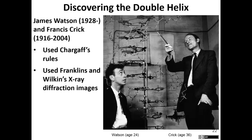Wilkins thought researchers needed to work together. Rosalind Franklin had no desire to work with Watson and Crick, though. Using her X-ray diffraction and Chargaff's rules, Watson and Crick were able to construct the double helix. Watson, Crick, and Wilkins received the Nobel Prize in Physiology and Medicine for the discovery of the structure of DNA, in 1962.